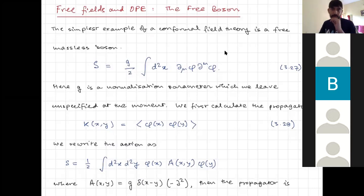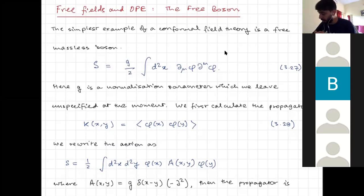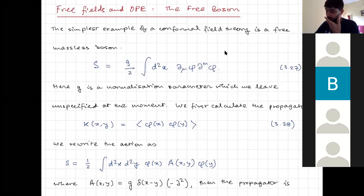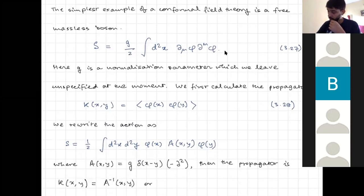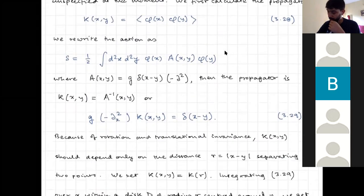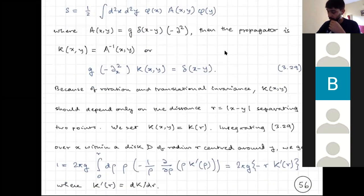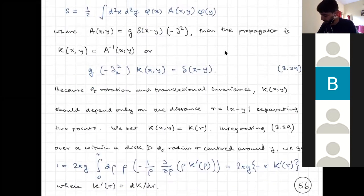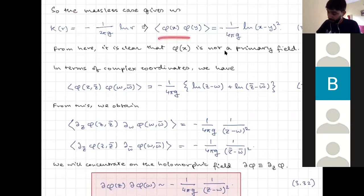Welcome back. After a week's break, let me remind you of what we did last time. We were looking at free fields, starting with the free boson, and we calculated the two-point function of φ with φ. We saw that it went like the log of (x−y)².